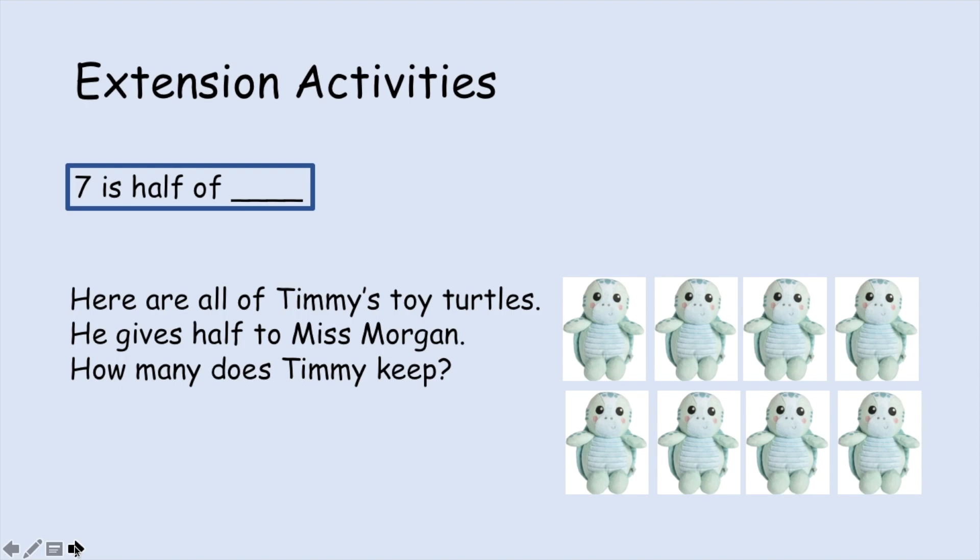And here is the extension activity. Seven is half of something else. So remember you need to add the same equal group to seven to find your answer. Here are all of Timmy's toy turtles. He gives half to Miss Morgan. How many does Timmy keep?